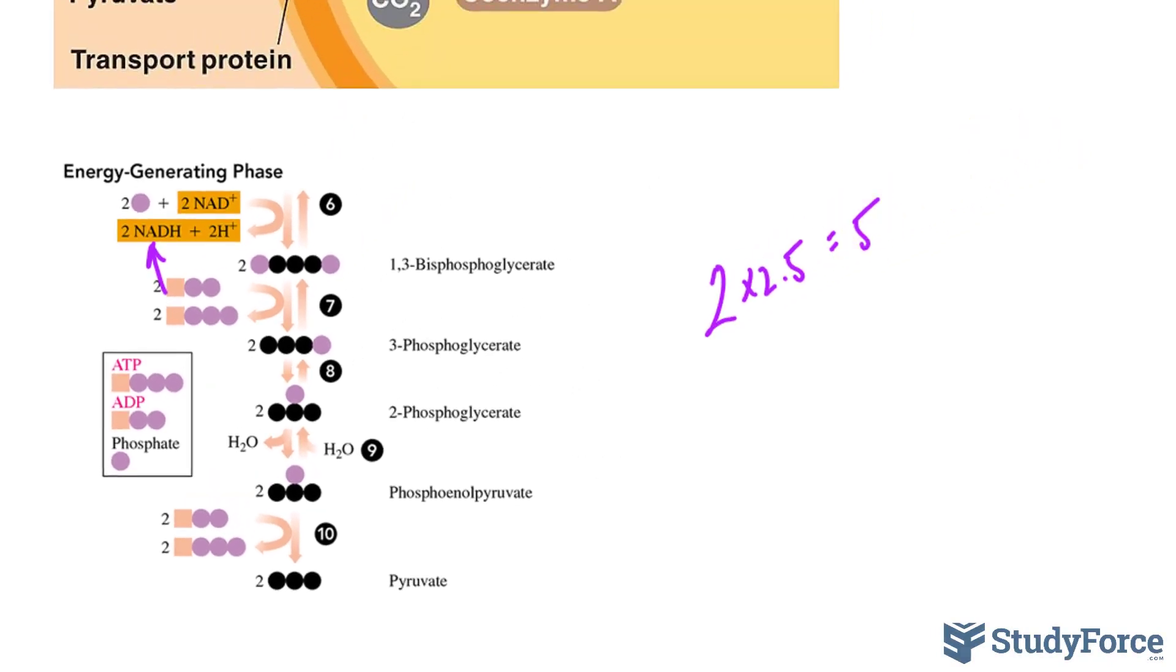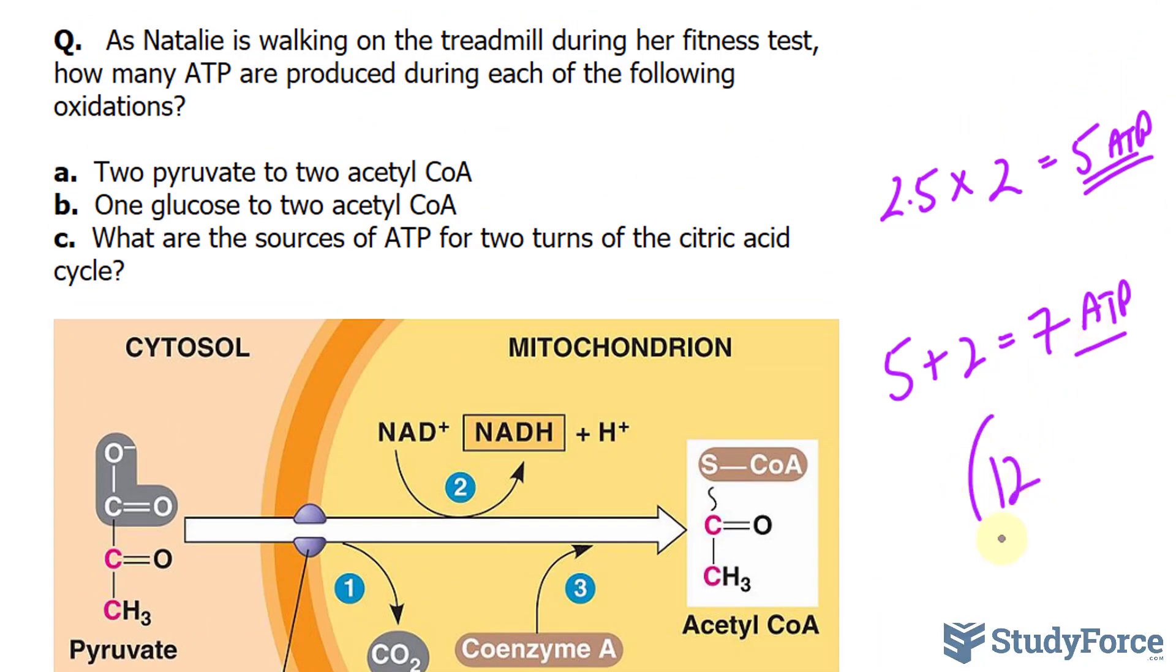which is five. Five plus seven means that 12 total ATP molecules are formed, and that's the answer for B.